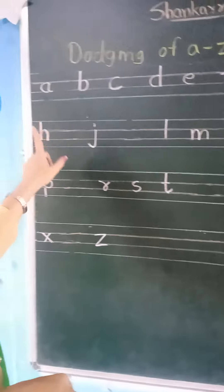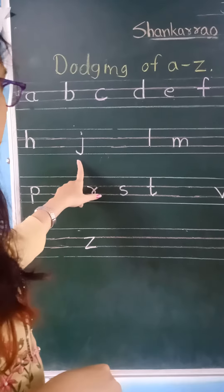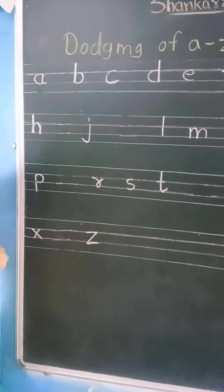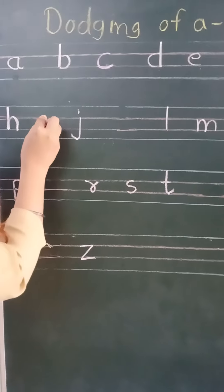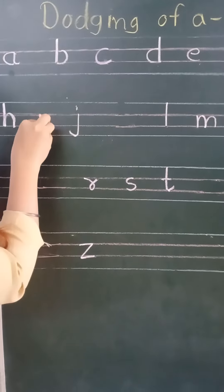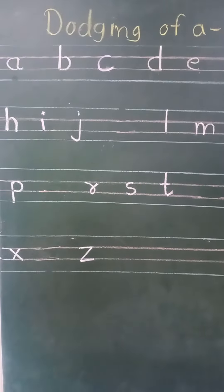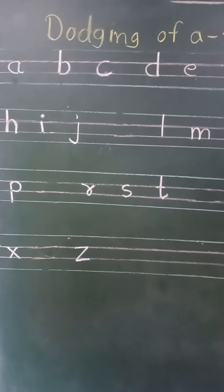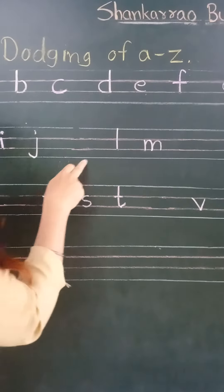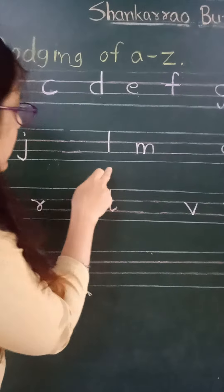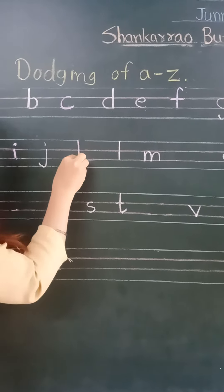G, H, I — R is missing. See, R is missing. So here letter I, small i. J, K, L. Where is K? K is also missing.